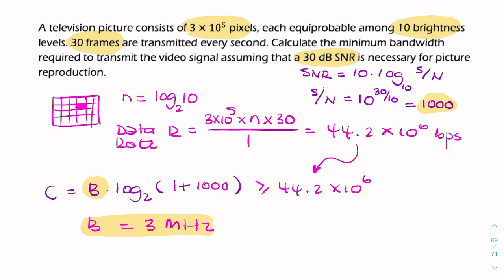In the end, we're governed by the Shannon Hardy law, and that'll tell us what the bandwidth required will be. So in this case, it's 3 megahertz, and that's your final answer.